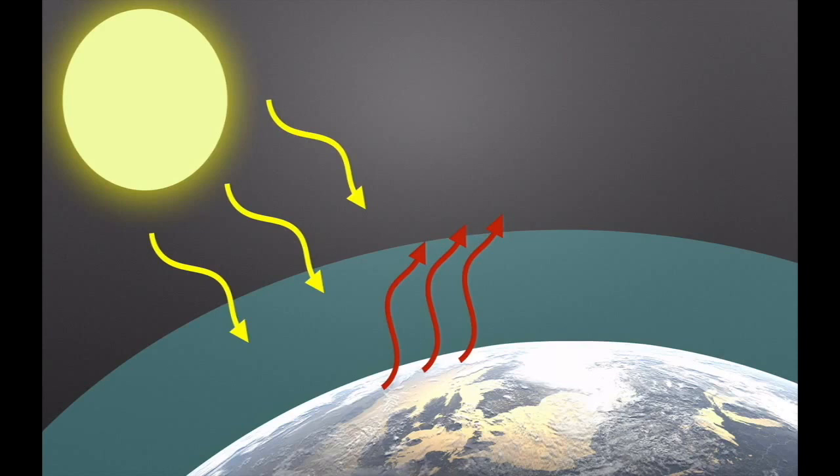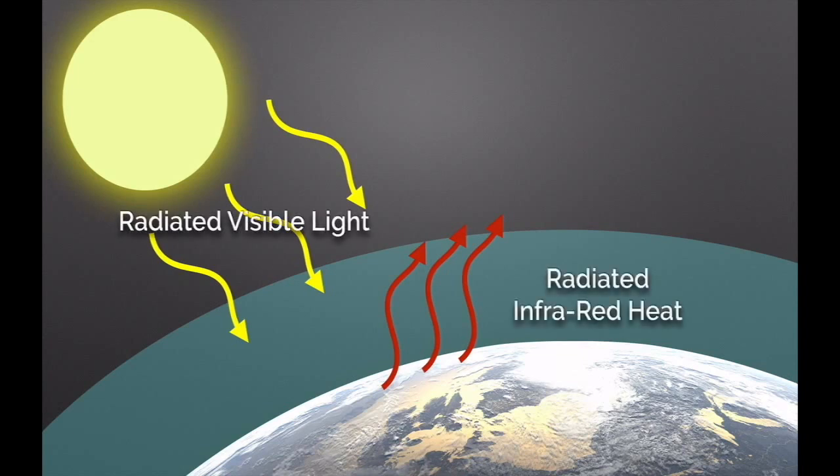There's also some UV light in there too. The ozone layer doesn't block it all out. What's interesting is that the heat that's being radiated, the red arrows in this picture, are actually infrared. So we have radiated visible light and then radiated infrared light.